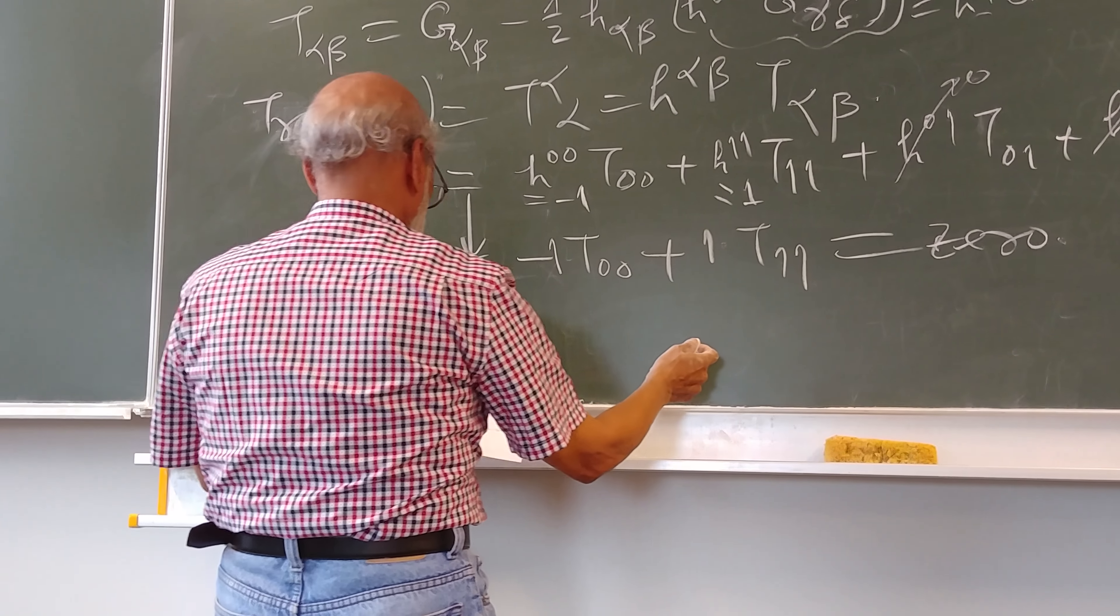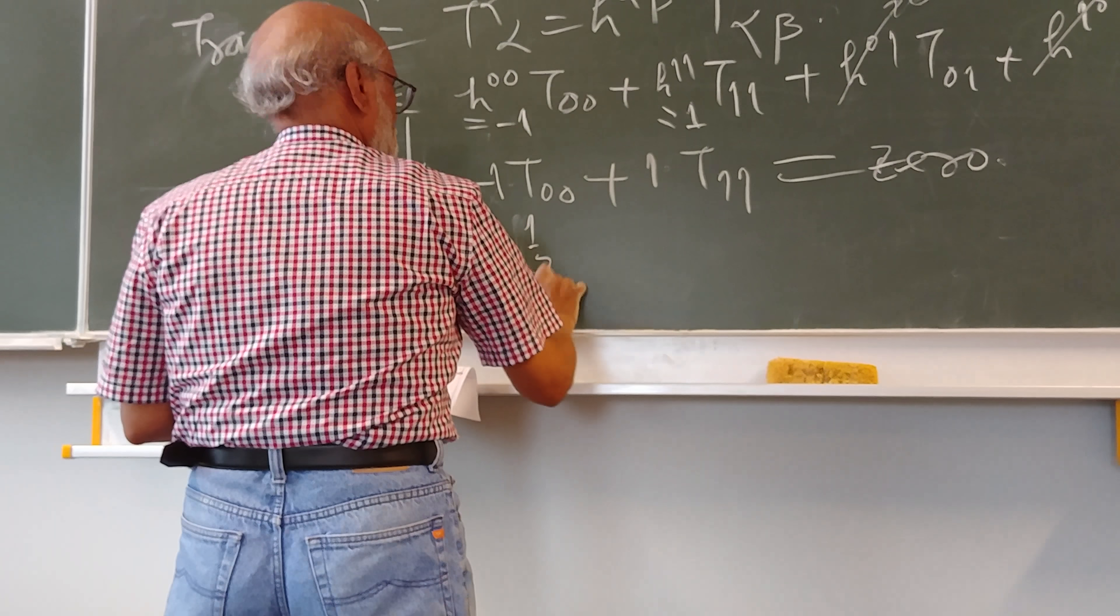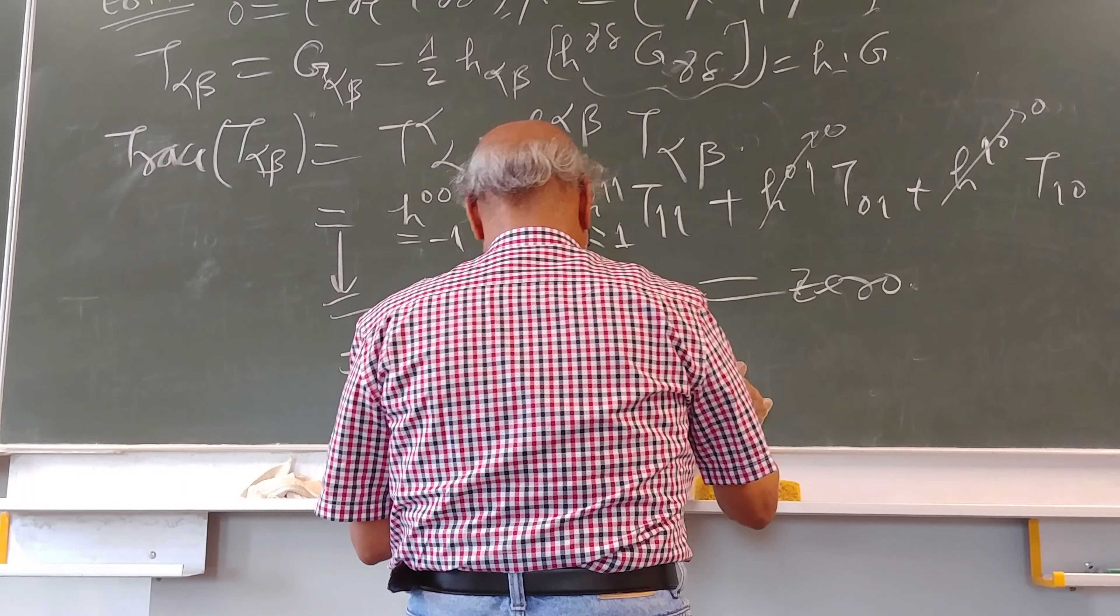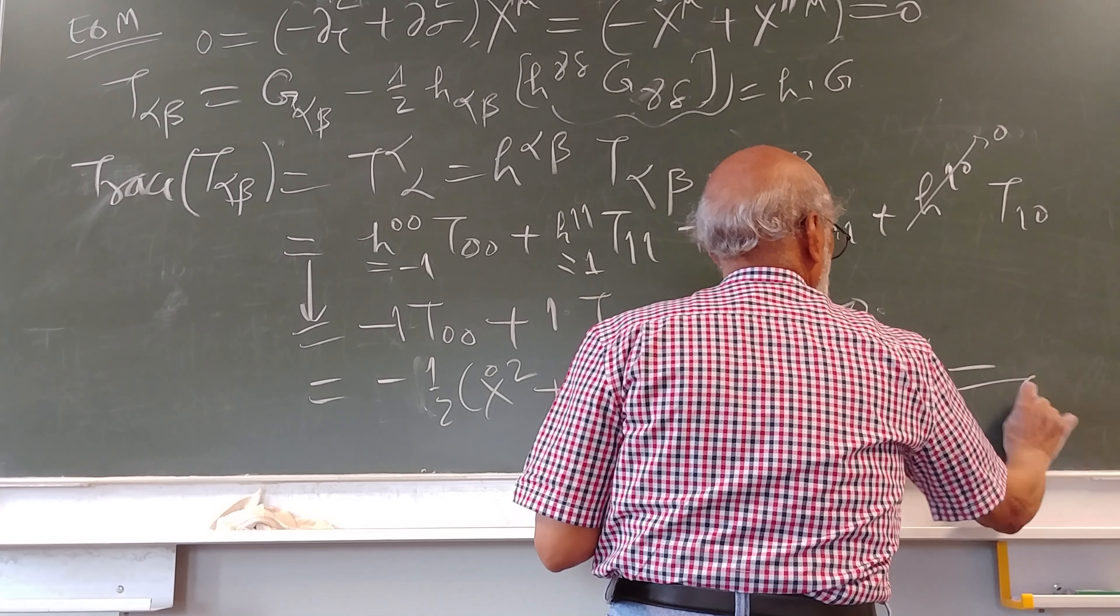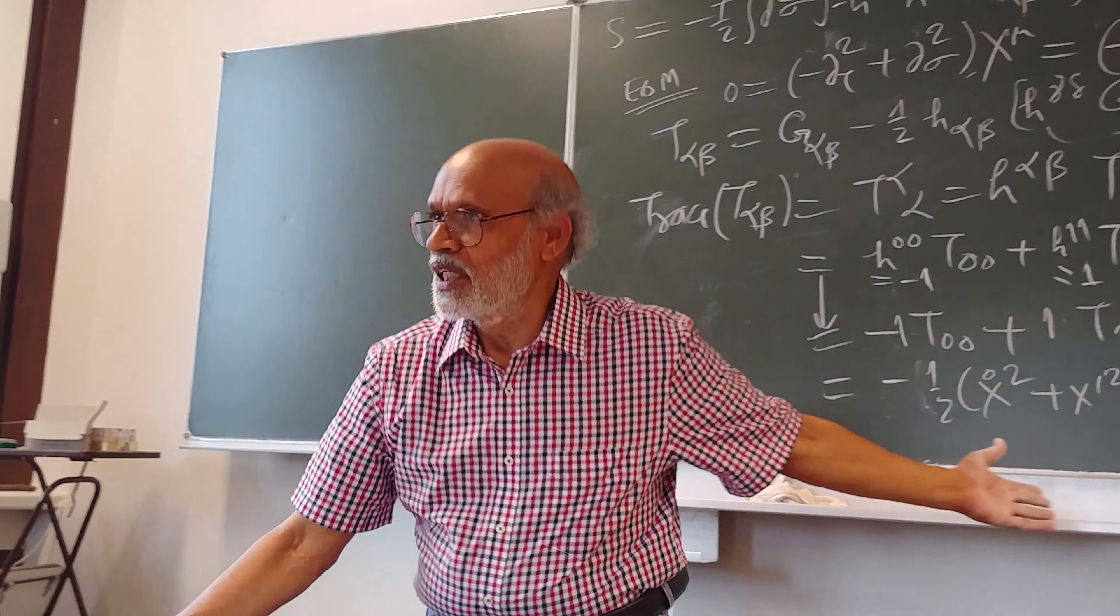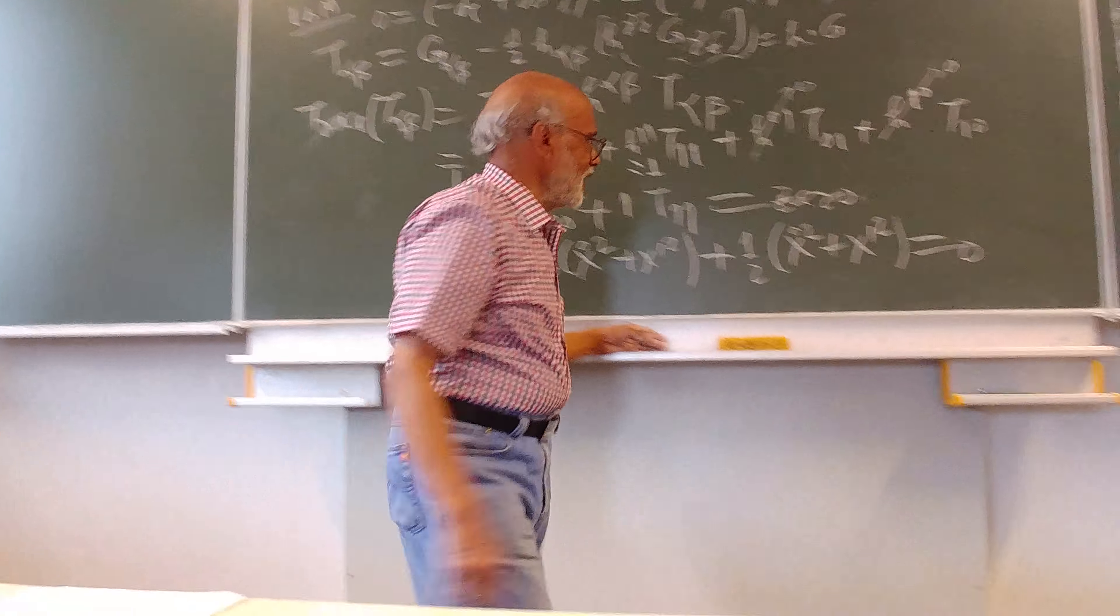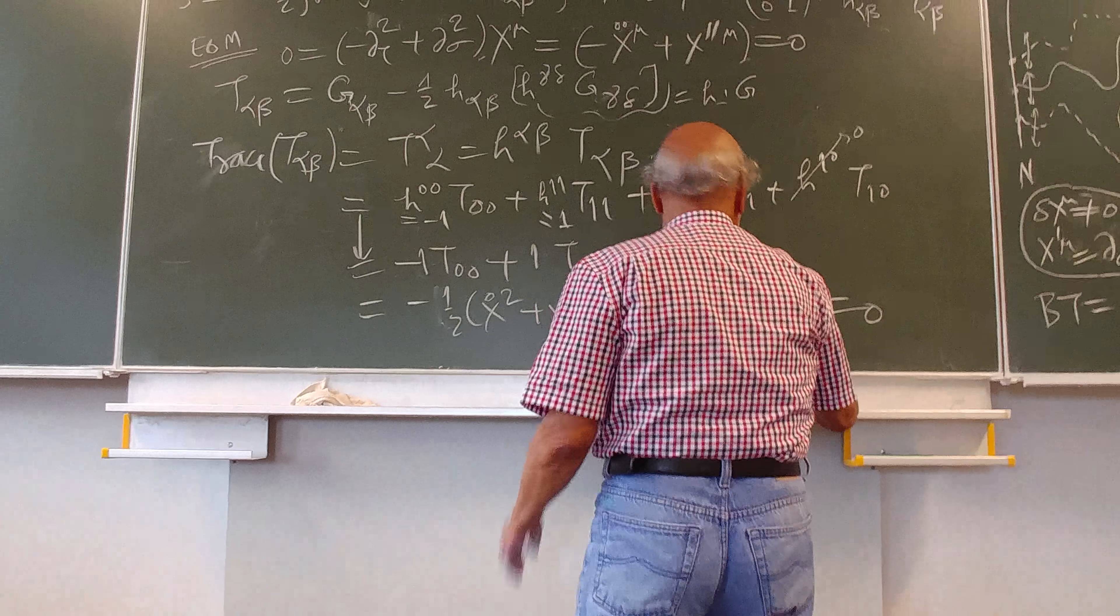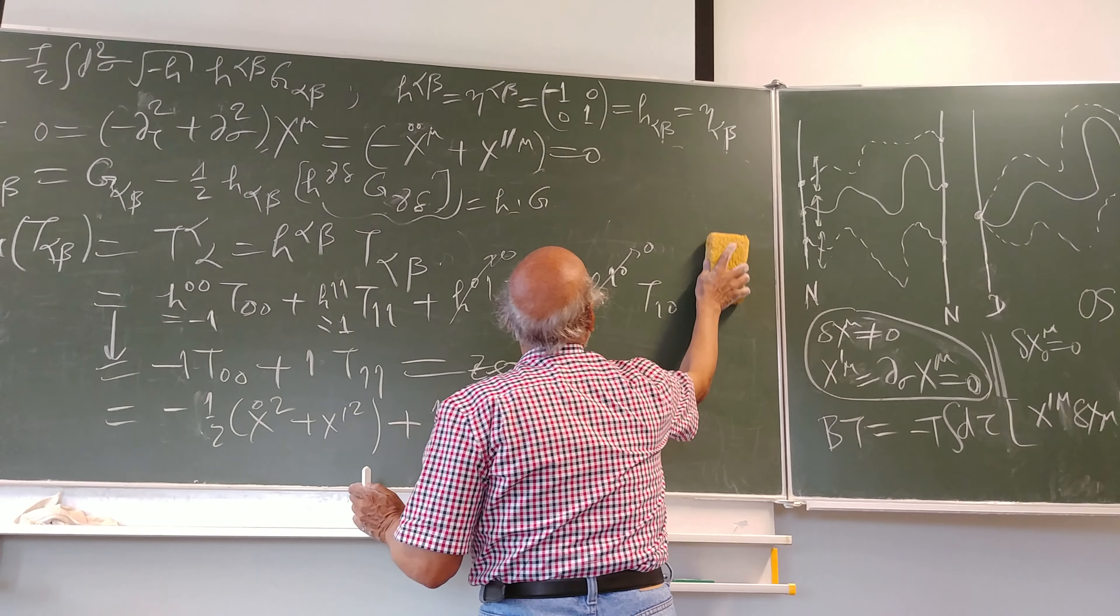So whatever it was, minus 1/2(Ẋ² + X'²) plus 1/2(Ẋ² + X'²) equals to zero. So whatever you just now said in words, you essentially said all this which we have just written down here, and so it's very nice. So we would have not only, we would have two of these constraints with us.